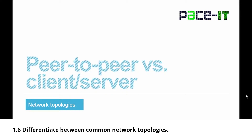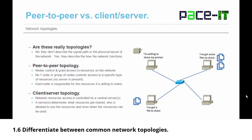Let's move on to peer-to-peer versus client-server networks. Are these really topologies? Not really — they don't describe the signal path or the physical layout of the network. But yes, they are topologies because they do describe how the network functions. In a peer-to-peer topology, the nodes control and grant access to resources on the network. No one node or group of nodes controls access to a single specific resource; there's no real server present.